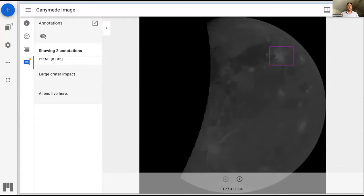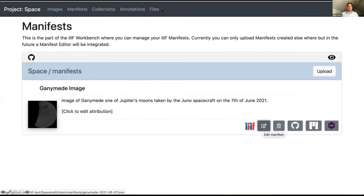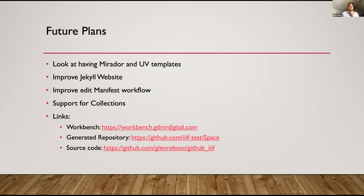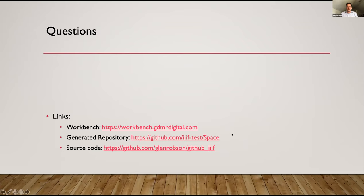Looking into the future: I'm thinking there might be a way to put in a template for Mirador, the Universal Viewer, or a NOAA viewer so you can embed those clients straight into your GitHub Pages website. I want to improve the Jekyll website — inspired by Nikki's example and Audio Annotate, I have a basic Jekyll template but would love to make it more functional, and maybe WAX is the answer. I'd also like to improve the edit manifest workflow, address the GitHub Pages caching issue, and add support for collections. I'll put links in the chat for the live Workbench, the generator repository, and the source code.